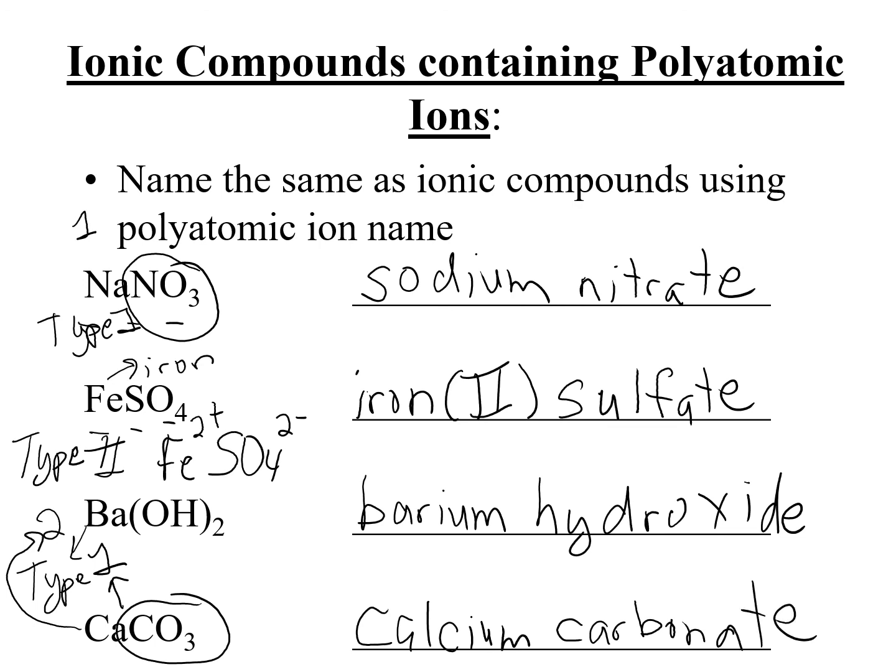Remember: the first and most important thing is to determine the type of compound — ionic or covalent — so you know what set of rules to follow. If it's ionic, determine if it's type 1 or type 2, then follow the appropriate set of rules. And you should be able to name the different types of chemicals.